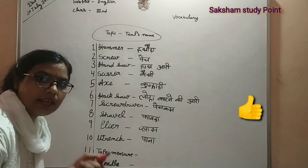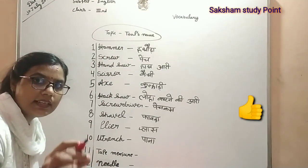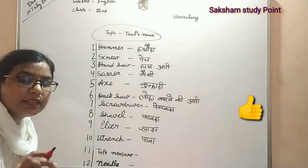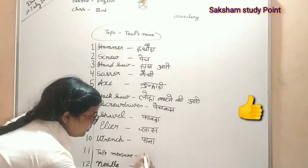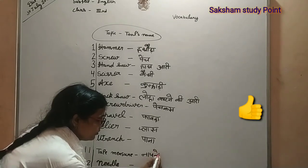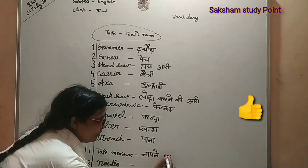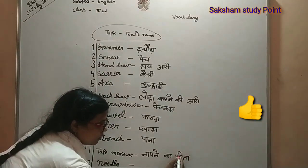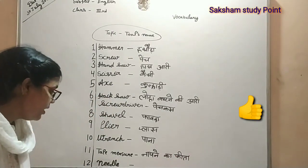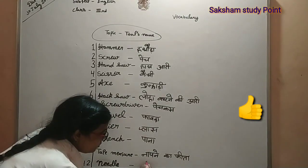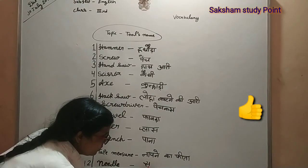T-A-P-E M-E-A-S-U-R-E, measure tape. Measure tape means hota hai — naapne ka tape. N-E-E-D-L-E, needle. Needle means hota hai — sui.